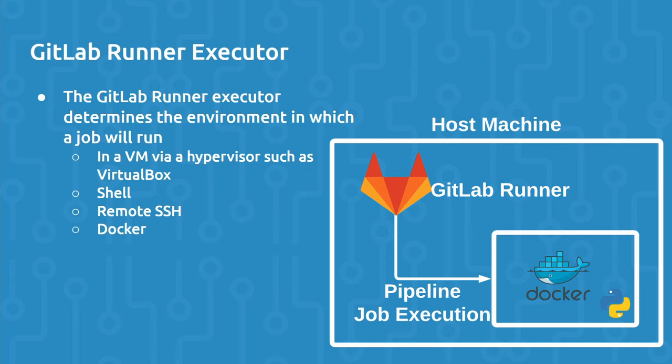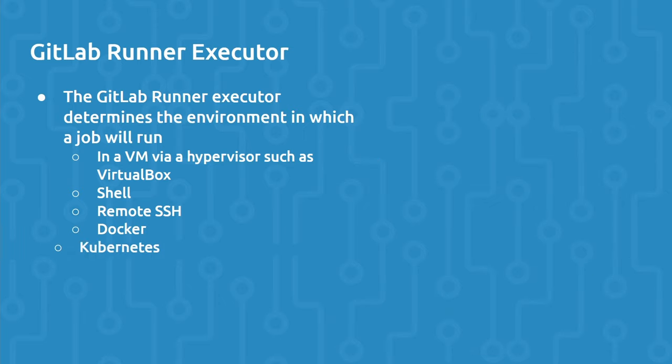With the Docker executor, the GitLab Runner is installed on the host machine of the Docker container. When a pipeline job is assigned to the GitLab Runner, it will pull the Docker image specified in the GitLab pipeline, start the container, and then execute the job instructions inside of the Docker container. Similarly, we can use the Kubernetes executor, where the job will be executed on a Kubernetes cluster. And the last option is to write your own custom executor for environments not natively supported by GitLab Runner.